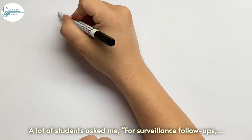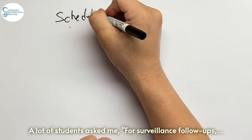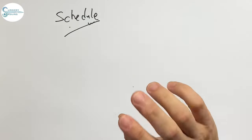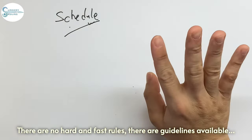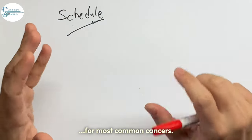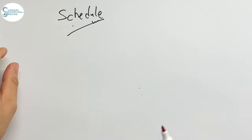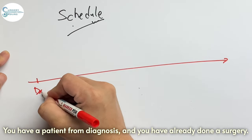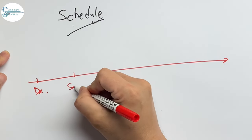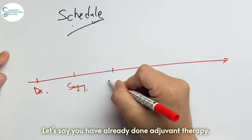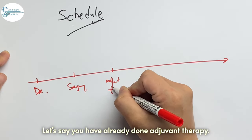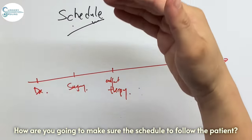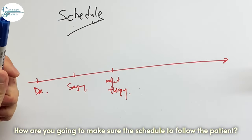A lot of students ask me, what surveillance follow-up, how's the schedule like? There is no hard and fast rule. There are guidelines available for most common cancers. The principle is as such: you have a patient from diagnosis and you have already done the surgery. And say you have already done the adjuvant therapy. How are you going to make sure the schedule to follow up the patient?